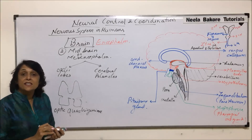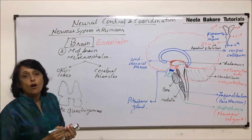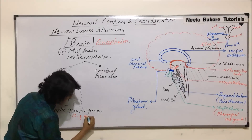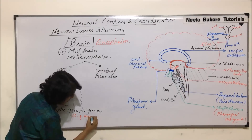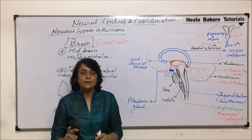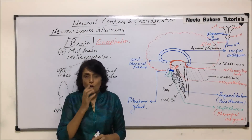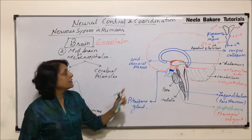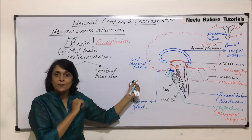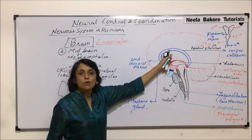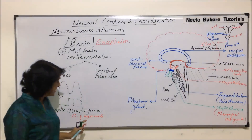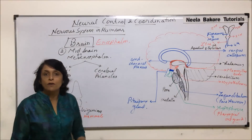This is a characteristic feature of mammals. So there are two important characteristic features found in mammals in the brain: one is the corpus callosum, which connects the cerebral hemispheres, and the second is this optic quadrigemina.